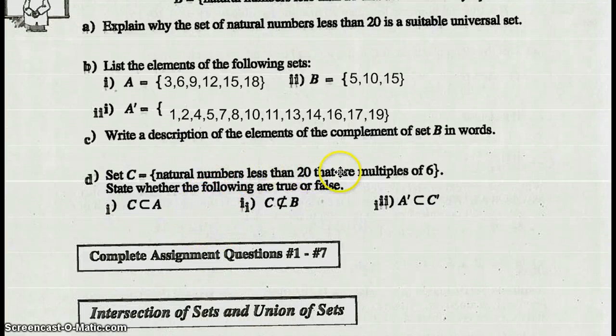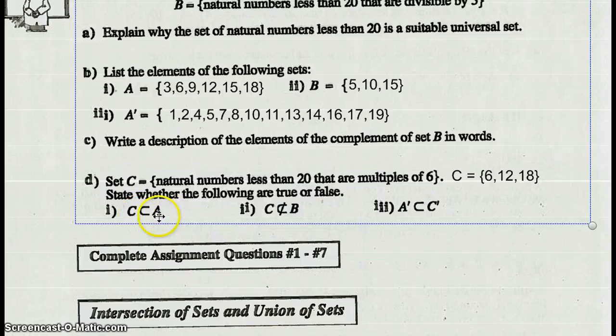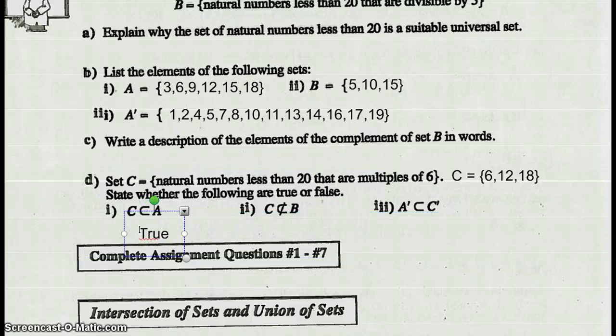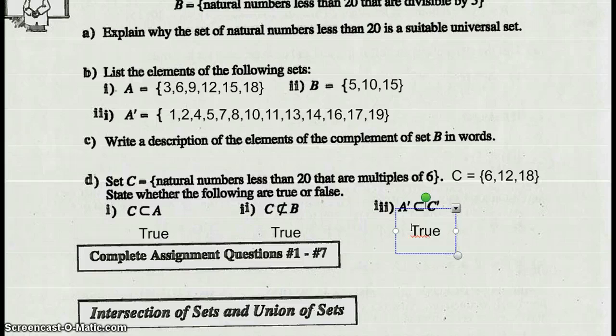Set C is natural numbers less than 20 that are divisible by 6. State whether the following are true or false. Is C a subset of A? Here's set C: 6, 12, 18. Those numbers are part of set A, so this is a true statement. C is not a subset of B. You look at C, they're not part of B. This is also a true statement. A prime is a subset of C prime. Are all these elements part of all the ones that are not 6, 12, and 18? Yes, that is also true. So those three are all true statements.